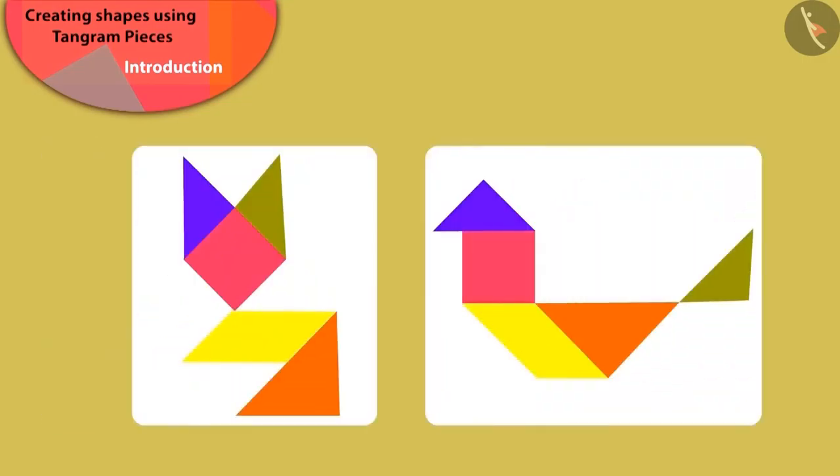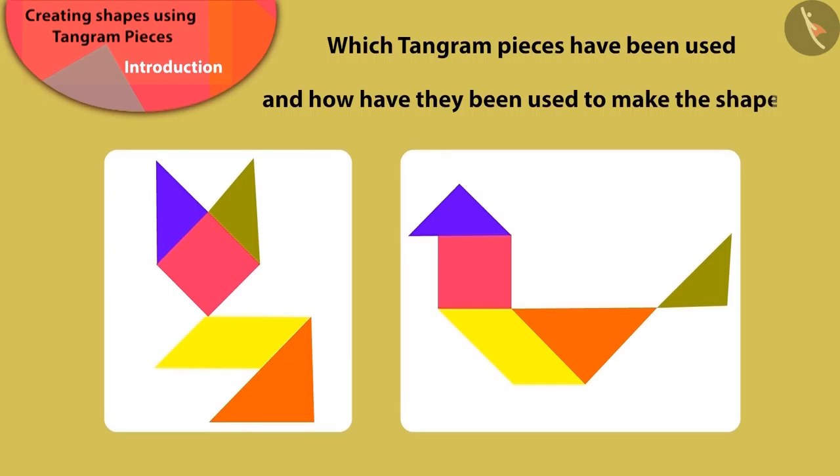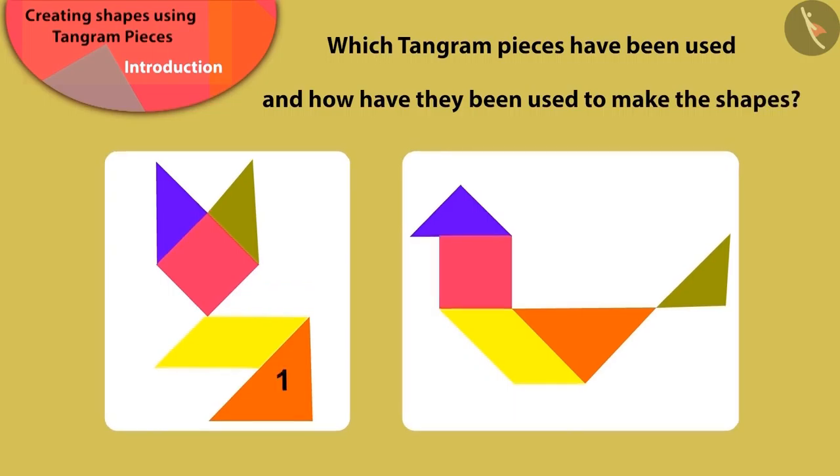With just these five pieces of Tangram, we can make various different shapes. Children, here we can see both the shapes made by Babban. Can you say, which pieces of the Tangram have been used to make these shapes?